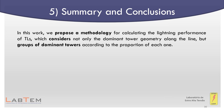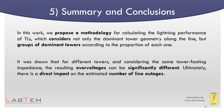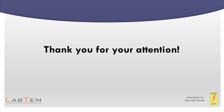In this work, we propose a methodology for calculating the lightning performance of transmission lines which considers not only the dominant tower geometry along the line, but groups of dominant towers according to the proportion of each one. It is shown that for different towers considering the same tower foot impedance, the resulting overvoltage can be significantly different. This difference directly impacts the determination of critical current and the probability of it being exceeded, ultimately leading to a direct impact on the estimated number of line outages. Thank you for your attention.